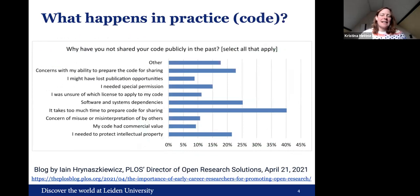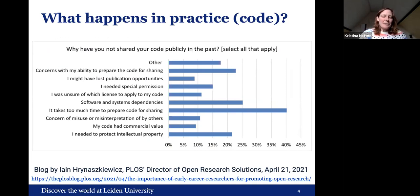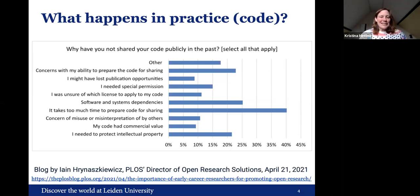What actually happens in practice, focusing on code: I found this very interesting blog by the plus director of open research solutions. They asked users why they have not shared their code publicly in the past. The top reason was that it takes too much time to prepare code for sharing. The second was software and system dependencies. The third was concerns with their ability to prepare the code for sharing. These are things that researchers really need to practice.